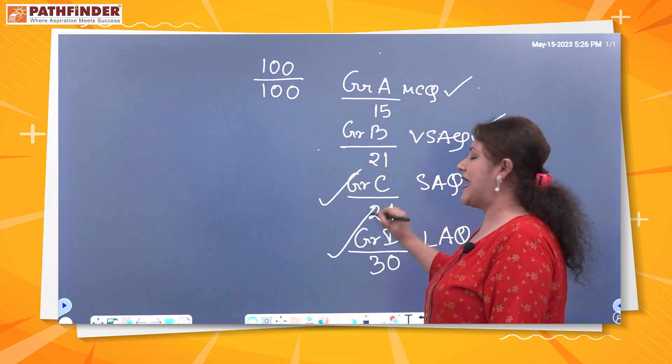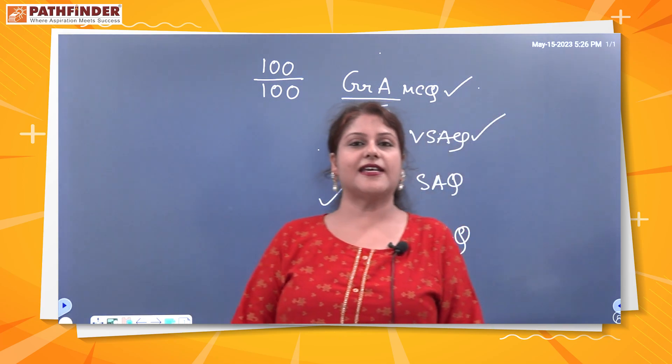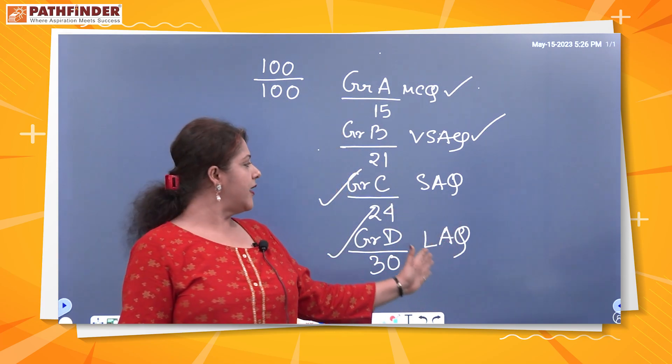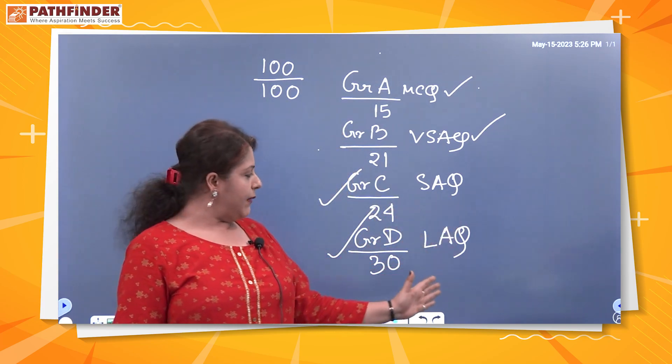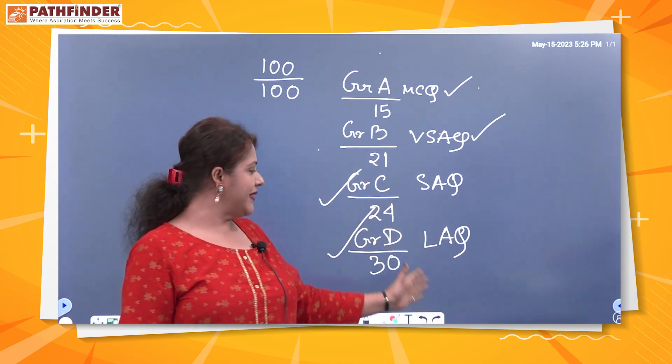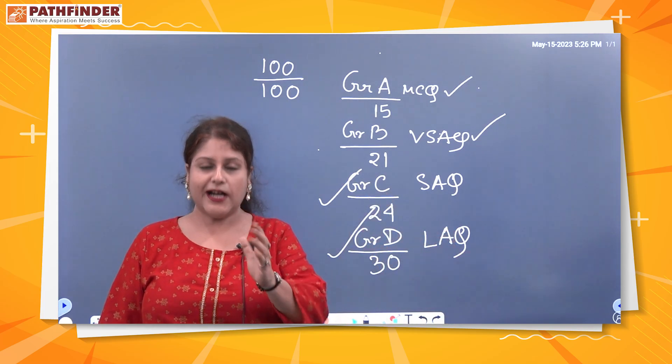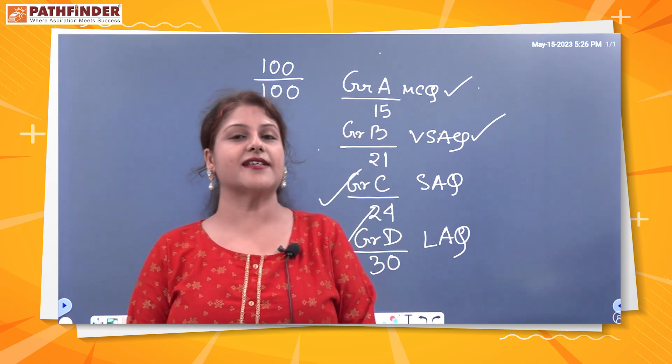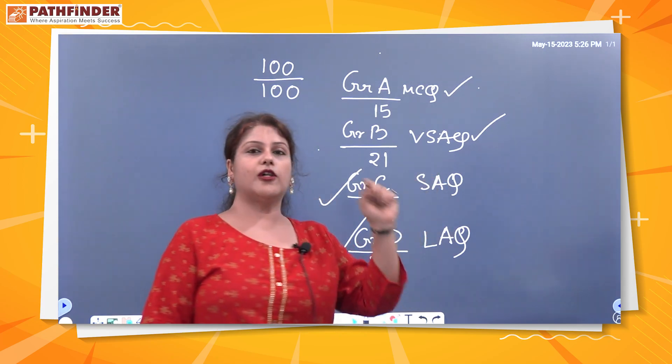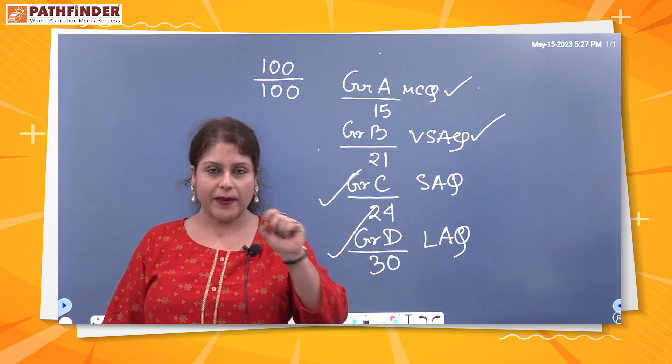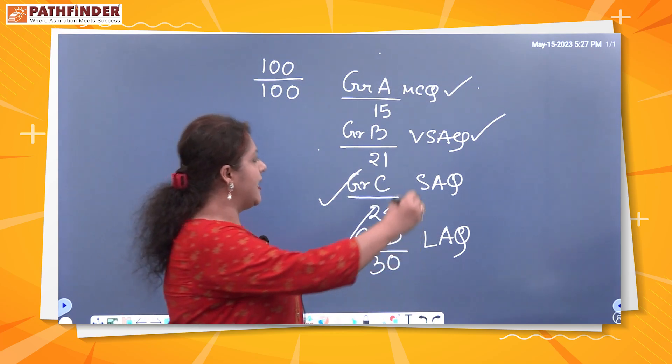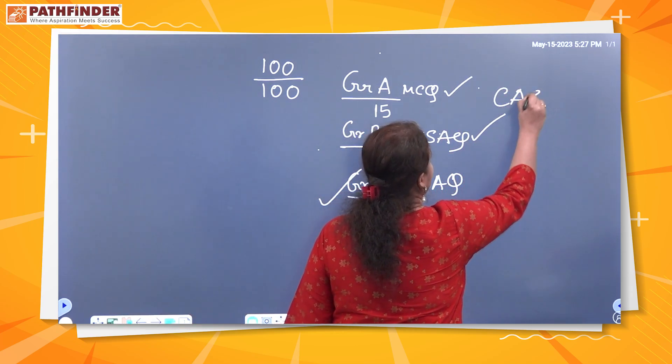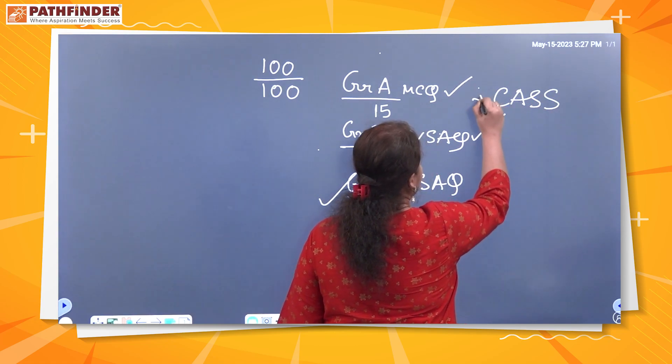These two groups, Group C and D. If we look properly, here we have to do four questions for 24 marks, and Group D we have to do five questions, that is 30. For this, Pathfinder Mock Test is inevitable. Let us study why. First of all, if any student all over Bengal takes Pathfinder Mock Test Series, they develop this quality: CASS.